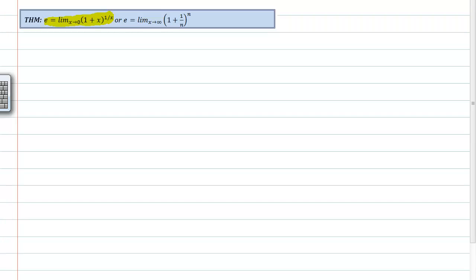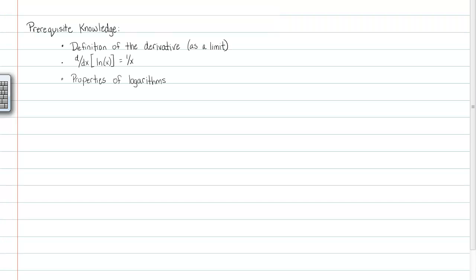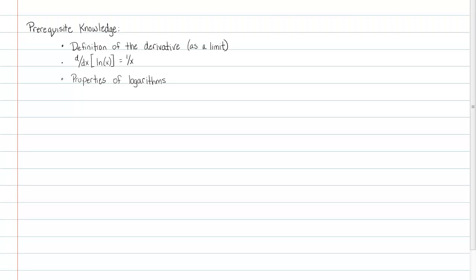There are a few things we'll need to know prior to starting the proof. First, you have to know the definition of a derivative as a limit, because we're going to use that in our proof. We'll also need to know the derivative of the natural log is 1 over x — I proved that in the video right before this. Finally, you'll need to know several properties of logarithms and, obviously, calculus.